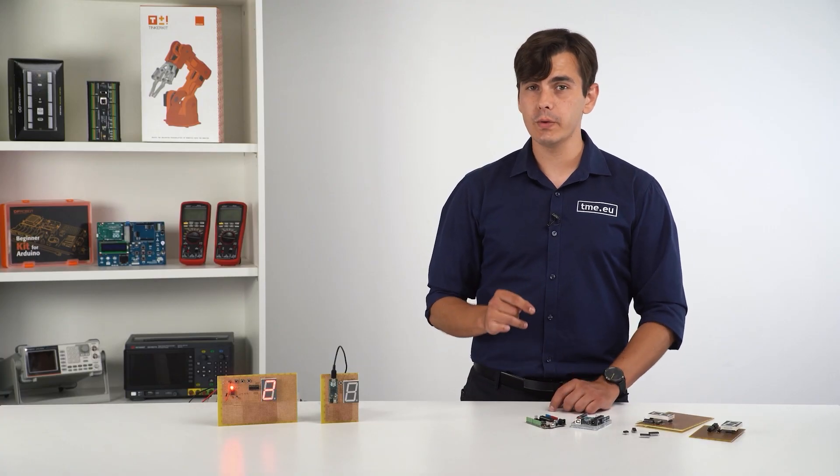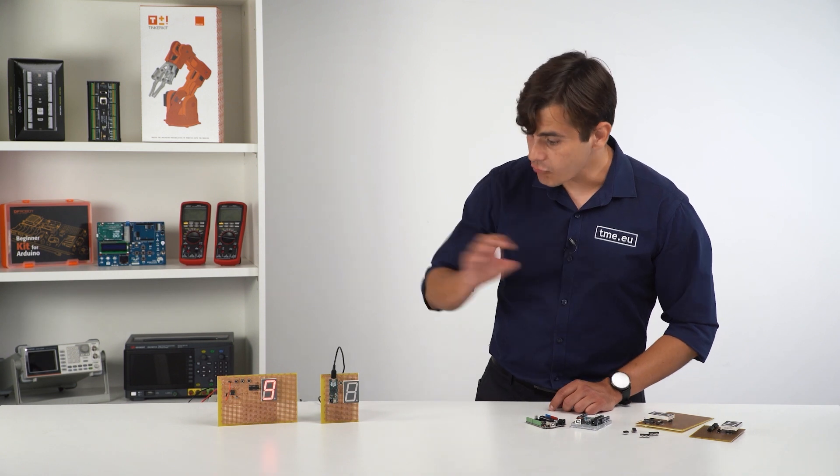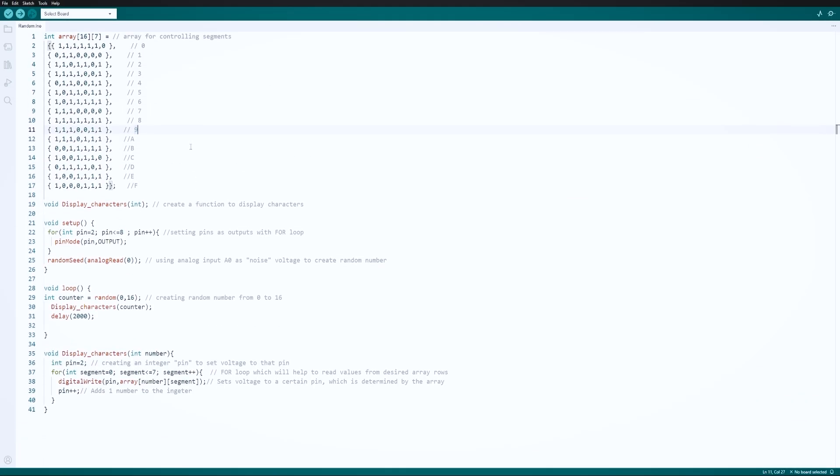To finally prove that MCU can do amazing things, we are going to display random stuff, like numbers and characters. Basically what we had. To do this, we need to fill the array with all the characters that we used before and to add two additional lines. Two additional lines to generate random numbers.